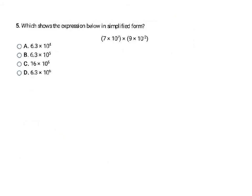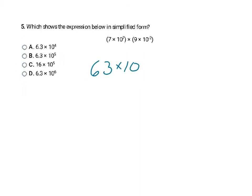Here I have two numbers in scientific notation being multiplied. I multiply the coefficients: 7 times 9 is 63. Then I add the exponents: 7 plus negative 2 is 5. So I have 63 times 10 to the 5th. To write in scientific notation, I move the decimal one place to get 6.3 — making the number smaller means the exponent gets bigger by 1, giving 6.3 times 10 to the 6th — final answer C.